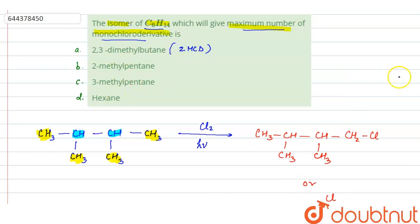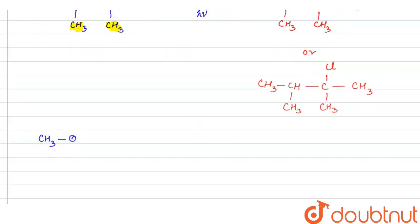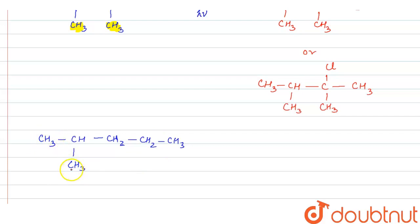Now we will check the other options. The second option is 2-methylpentane: CH3-CH(CH3)-CH2-CH2-CH3. In this molecule, the two CH3 groups on carbon 2 are similar, giving one type. Then carbon 2 is different, carbon 3 is different, carbon 4 is different, and carbon 5 is different. So there are five different types of carbon atoms, giving five monochloro derivatives.